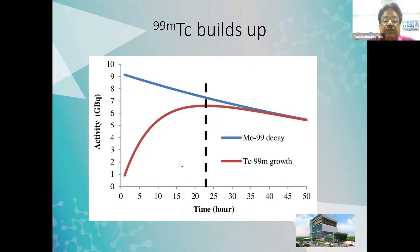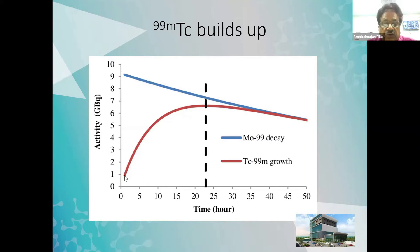At the same time, if you take molybdenum which is pure — technetium has been removed from it — the technetium will start growing slowly. At 24 hours, it will almost come to about 94 to 95%. So this is the time we elute our technetium generator.